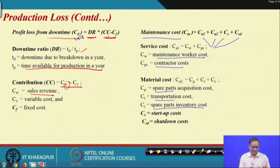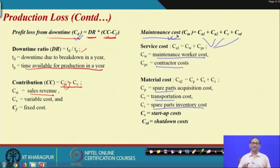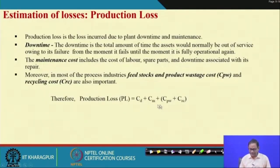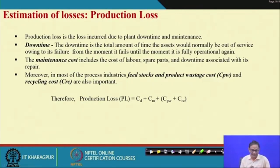The profit loss from production downtime is found, and you require maintenance and repair because of the accident damage. In addition to C_D and C_M, there is C_PW — feedstock and product wastage cost — and C_RC — recycling cost. You add all those costs and you will get the production loss.